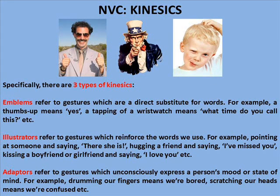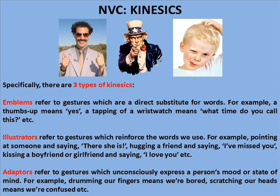Specifically, there are three types of kinesics. Emblems refer to gestures which are a direct substitute for words — for example, a thumbs up means yes, a tapping of a wristwatch means 'what time do you call this?' Illustrators refer to gestures which reinforce the words we use — for example, pointing at someone and saying 'there she is', hugging a friend and saying 'I've missed you', kissing a boyfriend or girlfriend and saying 'I love you'. Adapters refer to gestures which unconsciously express a person's mood or state of mind — for example, drumming our fingers means we're bored, scratching our heads means we're confused.